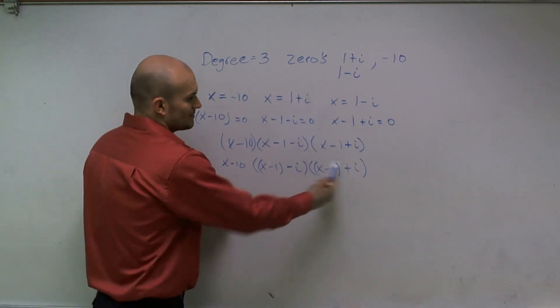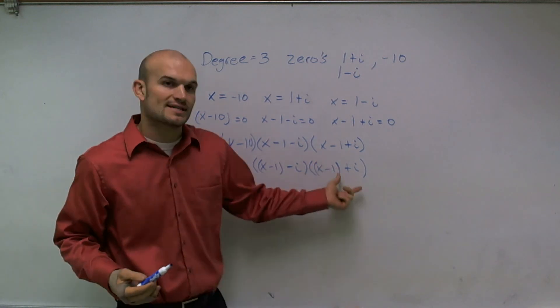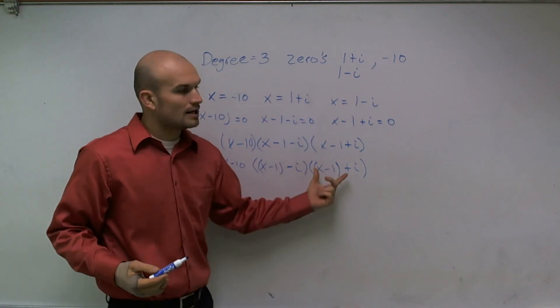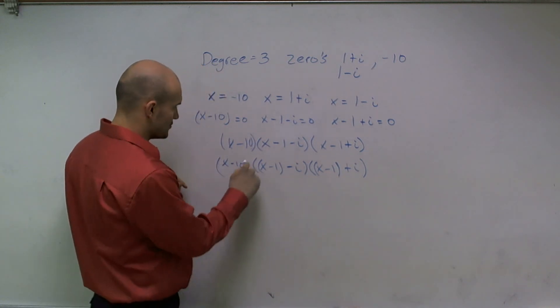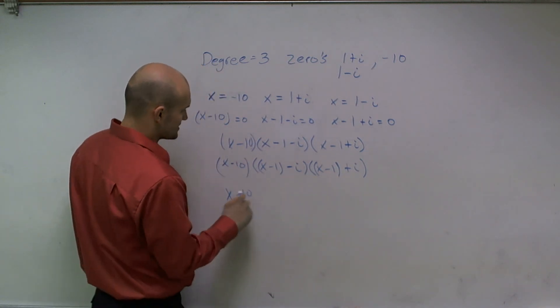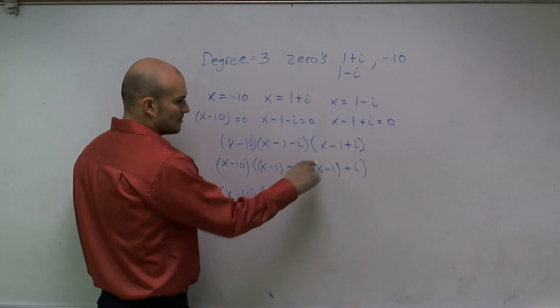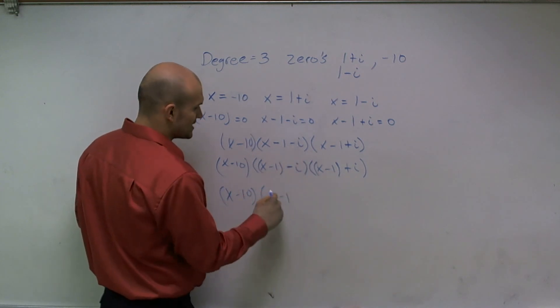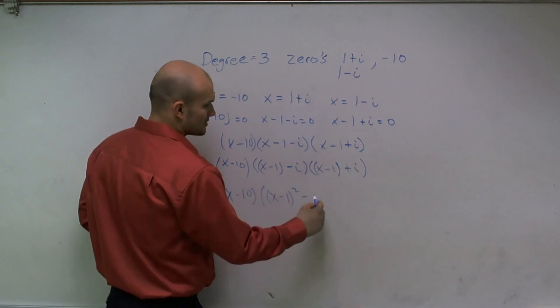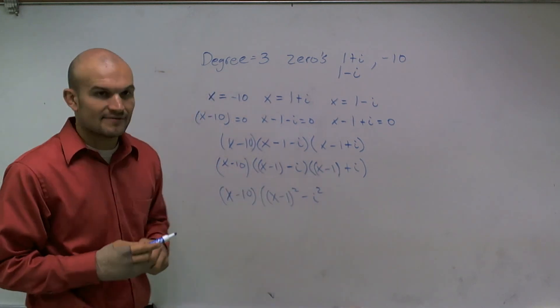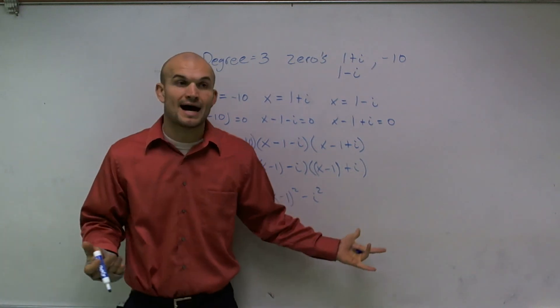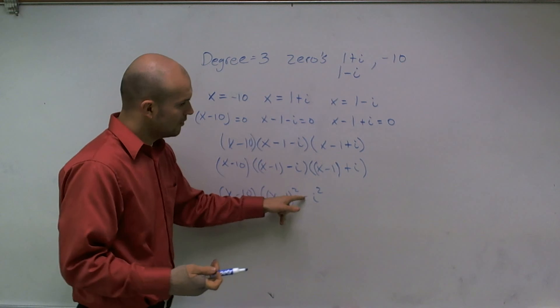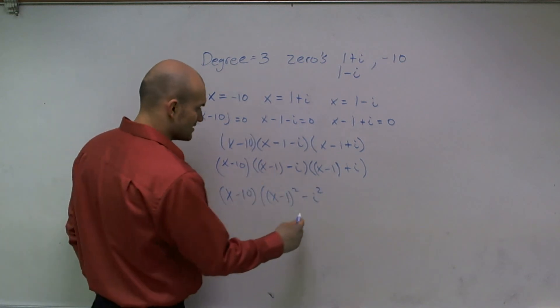Therefore, what that tells me is if I was to multiply these using like the FOIL technique, my inside terms would cancel out. So really, technically what I can just do is do my x minus 10, I can just multiply my front two terms, which is x minus 1 squared, and then minus the last two terms squared, which would be a negative i squared. Now, from dealing with complex numbers we know that i squared is equal to negative 1. Well, minus a negative 1 is going to be a positive 1.